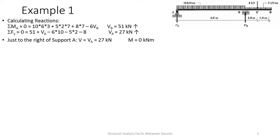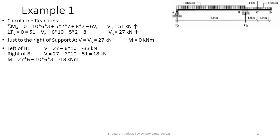Taking a section just to the right of support A, the shear force equals the reaction which is 27 kN, and the moment is zero. When moving to sections near support B, you must take a section before and after each support, before and after each concentrated load, and at each change of loading or change in the structure.